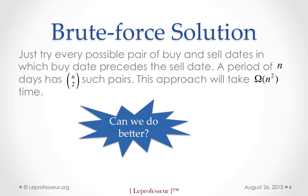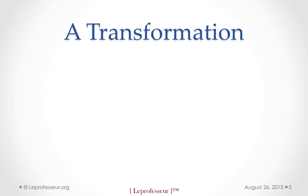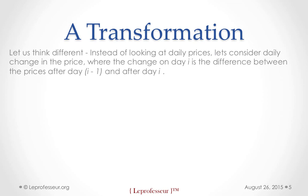Here, omega n-square represents the time complexity, lower bound. Those who are not familiar with time complexity, I would recommend you to watch previous lectures where I discuss analysis of algorithms, time and space complexity. Now, having said that, what can we do? Can we do something better? Sure, we can do something better. Let's try. Let's transform the original problem into something different. What can we transform? Let's think different. Instead of looking at daily prices, let's consider daily change in the price.